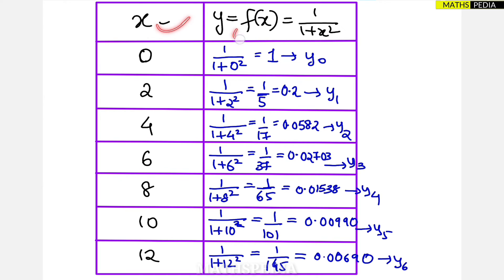So next, x value we have, y of x value, y is equal f of x value we got which is nothing but 1 by 1 plus x square. So 0, from 0 we have to start and we have to add the width so that we can get the next step.